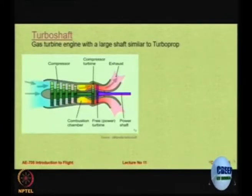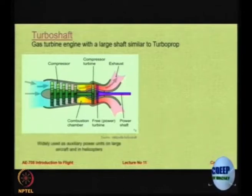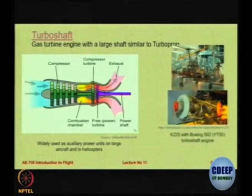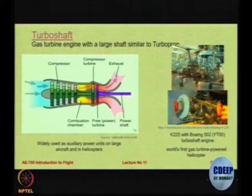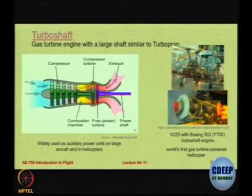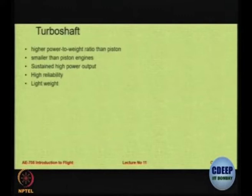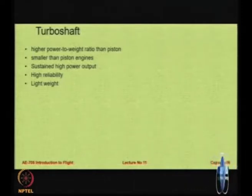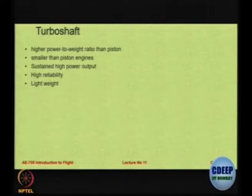The exhaust here does not give any thrust; the exhaust is just to throw the air out. It is very common for the APUs — the auxiliary power units — and for helicopters. For example, this is the world's first helicopter which was turbine powered; before this, helicopters were generally only piston powered. That was the first one to have a gas turbine in a helicopter, and that one was a turboshaft. You get a higher power to weight ratio than a piston, and it becomes smaller and more compact than piston engines.